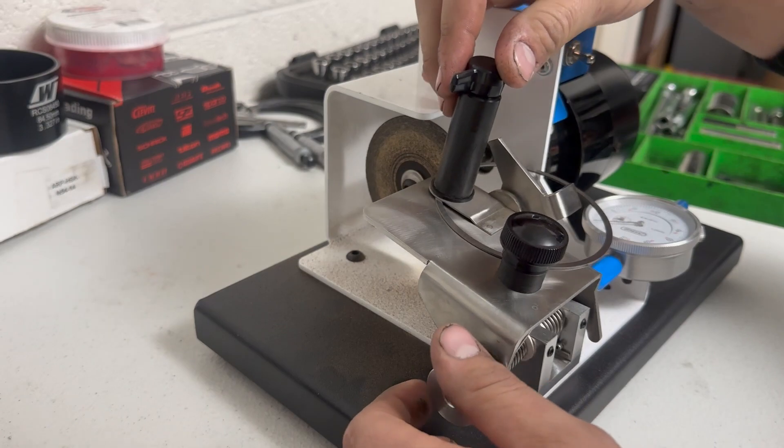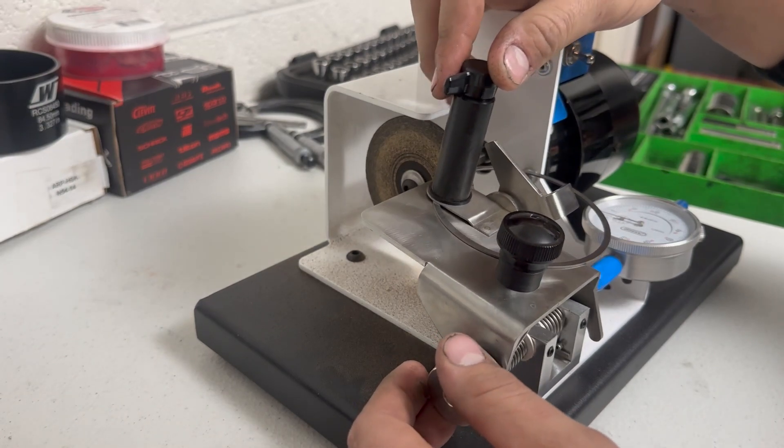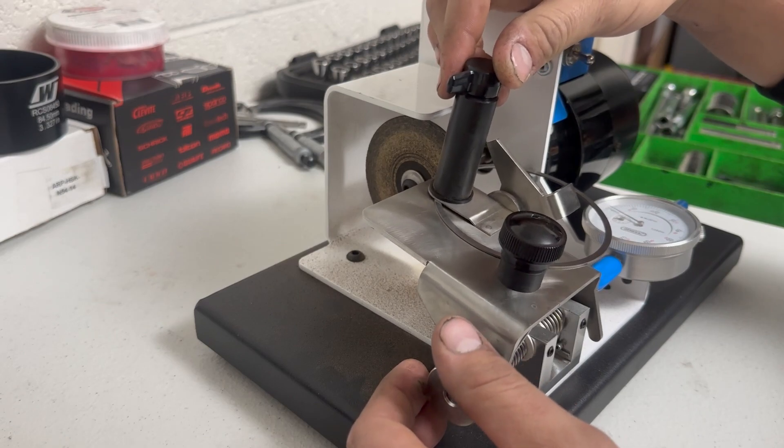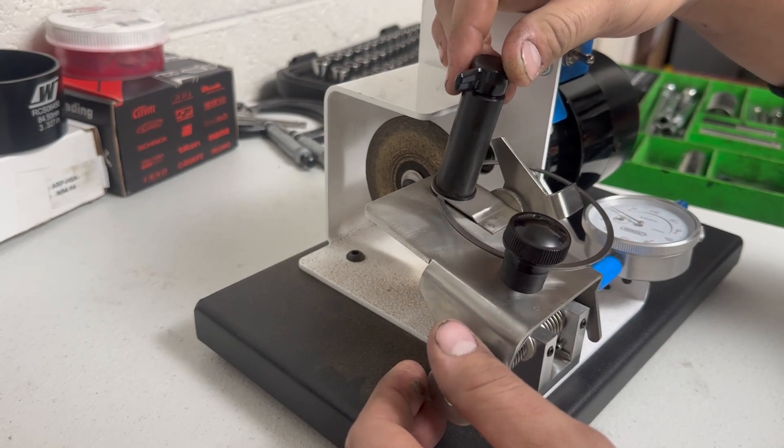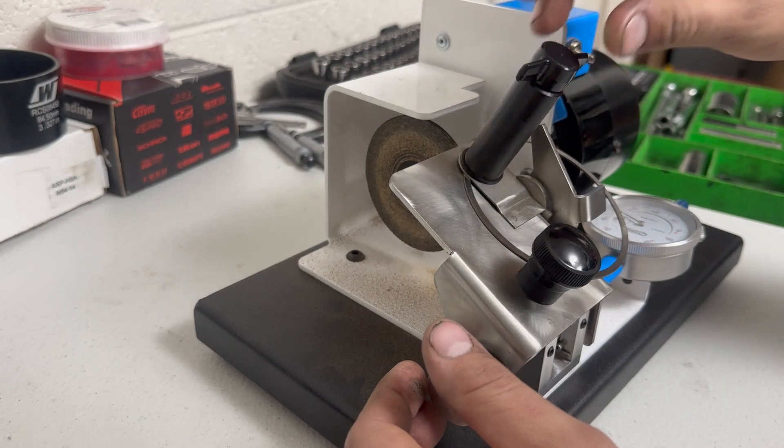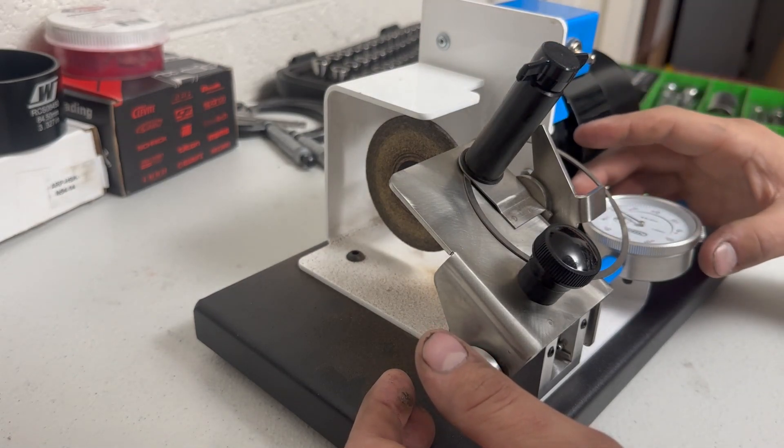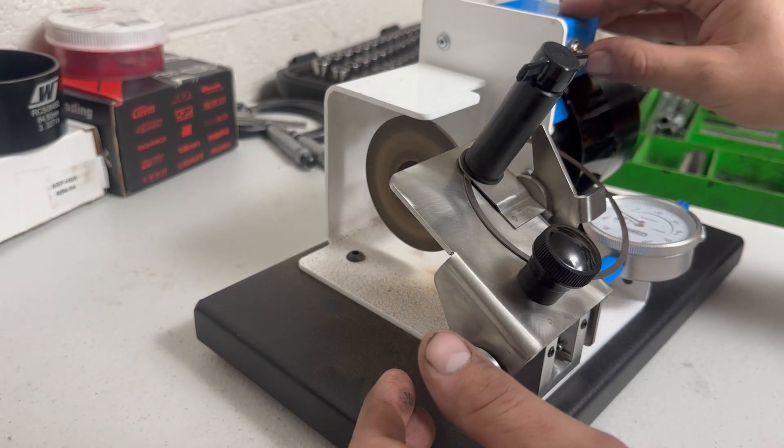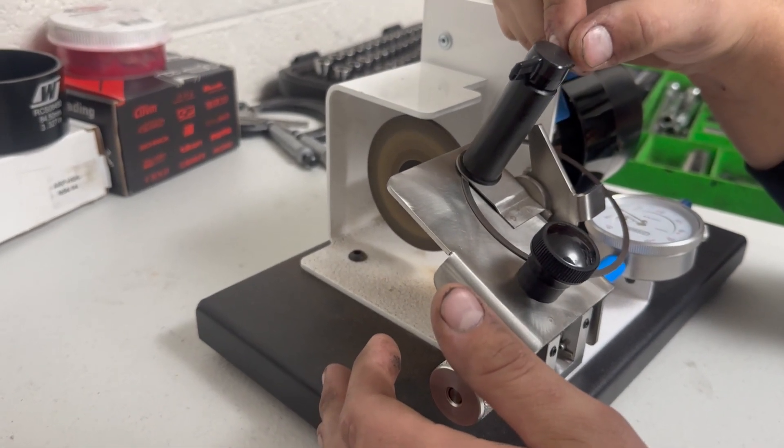Get that all nice and tight in there and then I will back this off and get it zeroed so right when I hear it touch the blade. So now it's touching, that should be about zero. It's pretty zeroed from the last time. I'm gonna zero the gauge, I'm gonna start this thing up.